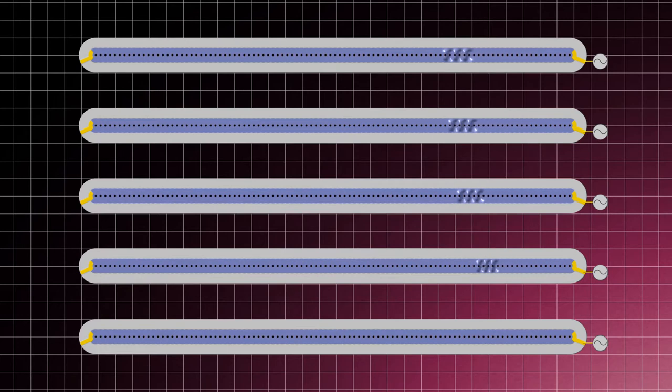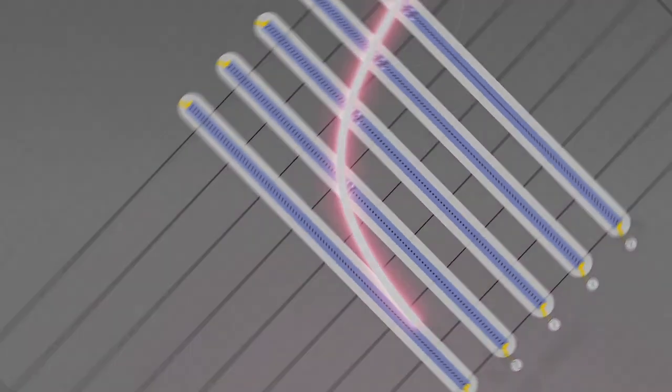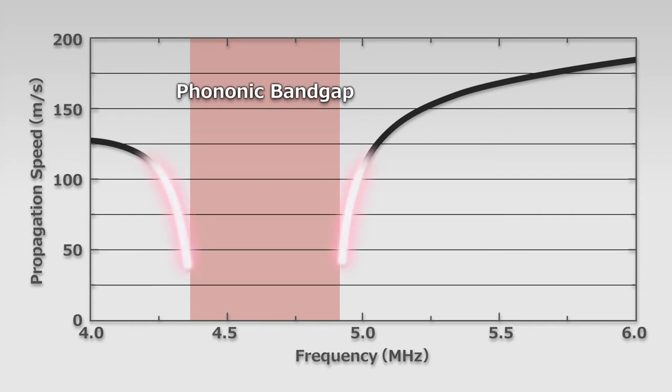We also measured the relationship between phonon frequency and propagation speed. It was found that a phononic bandgap exists in which phonons cannot propagate, and that this bandgap depends on the periodic structure of the phononic crystal waveguide. We also observed a slow phonon effect, in which the phonon speed approaches zero near this bandgap.